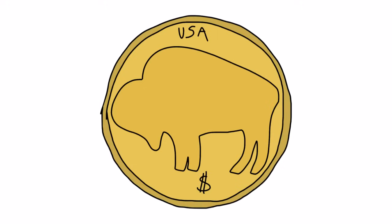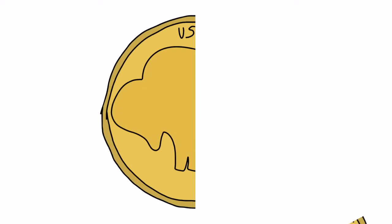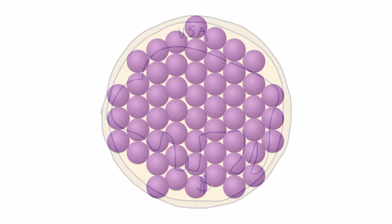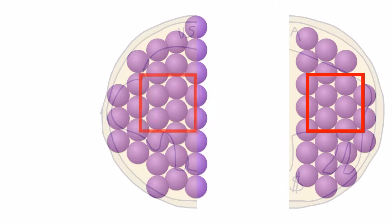If an object is cut in half, its density remains the same. Take a look at a gold coin, made of neatly arranged gold atoms. When cut in half, the tightness of the atoms does not change.